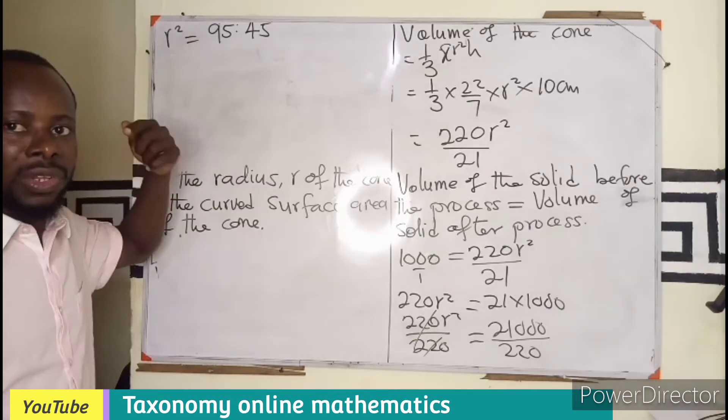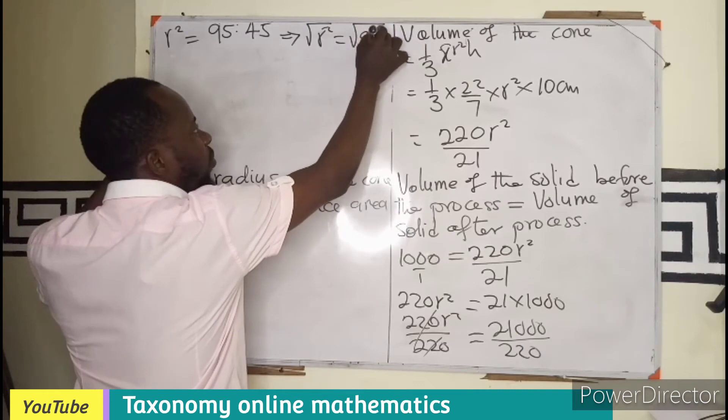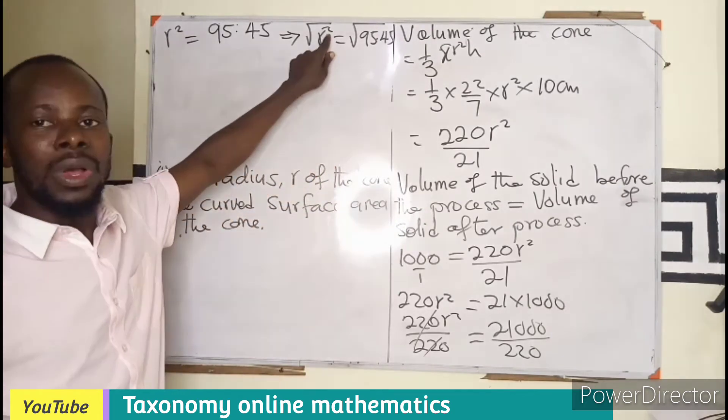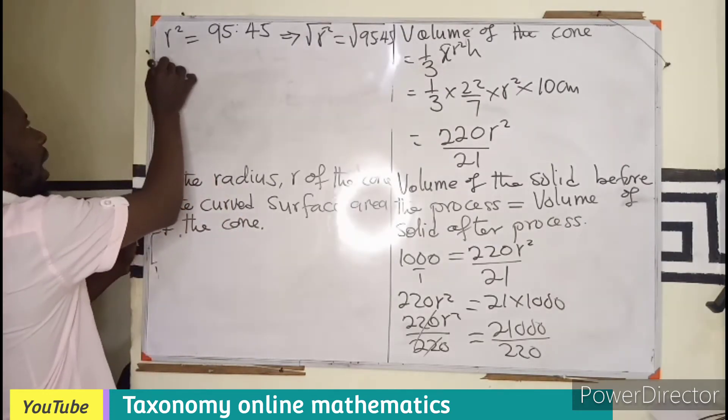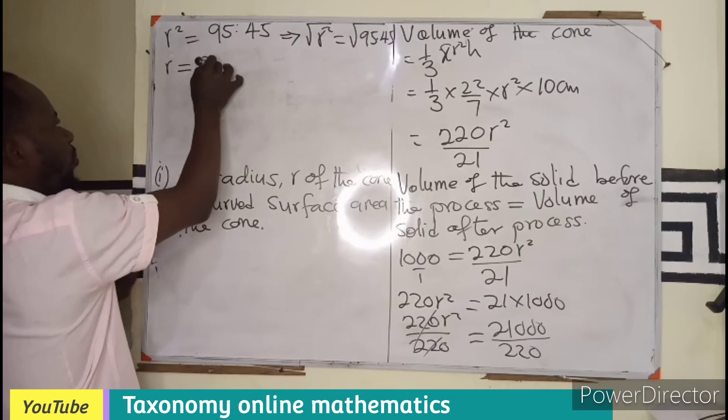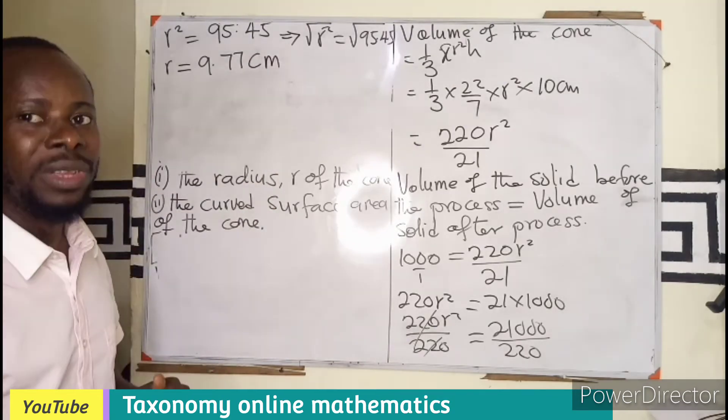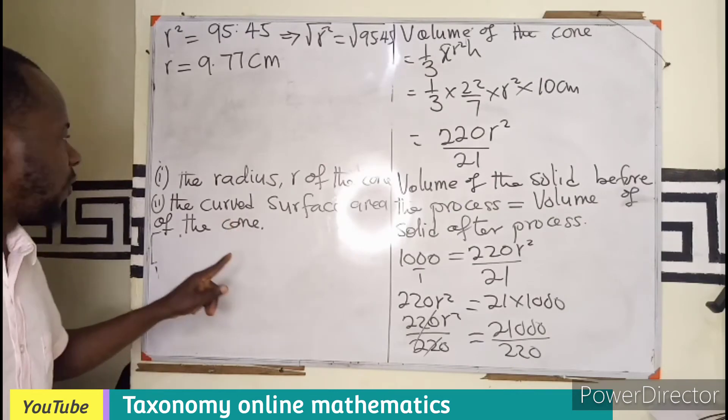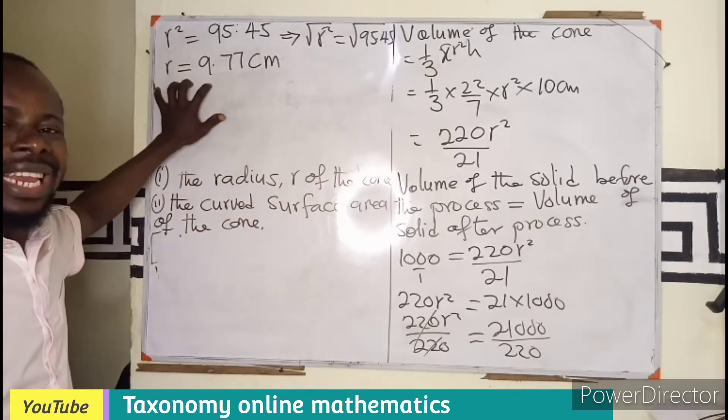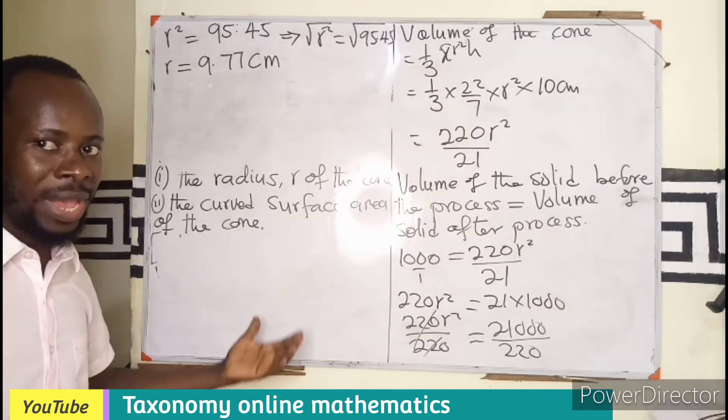But we are looking for r, not the r square. So this will be translated to mean the root of r square equals to root of 95.45. We are finding the root of the two sides in order to cancel our r square. That equals to the root of that on the calculator will give us 9.77. Don't forget the measurement is a centimeter. So 9.77 centimeter. So we have succeeded in finding solution to the first part of the equation. The radius of the cone is 9.77 centimeter or better still 10 centimeter to the nearest whole number.